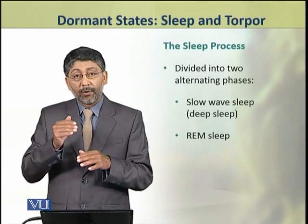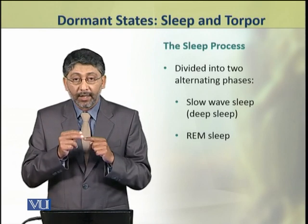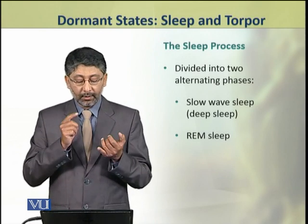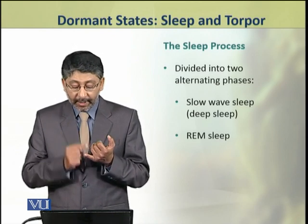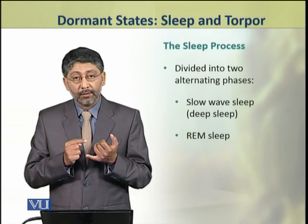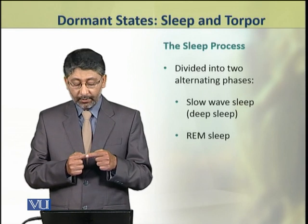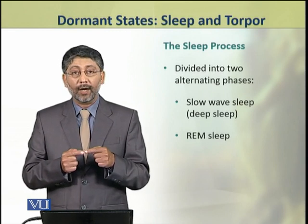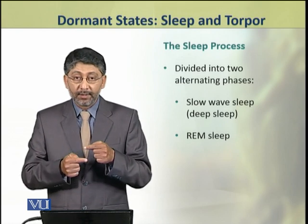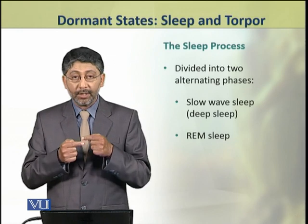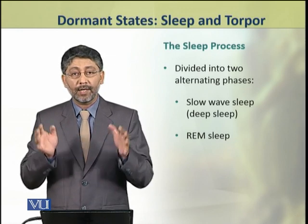The process of sleep is divided into two alternating phases. The first phase is slow wave sleep, which is called deep sleep. The second phase is REM sleep, or rapid eye movement sleep. Both these patterns of sleep alternate with each other many times during one sleeping shift.